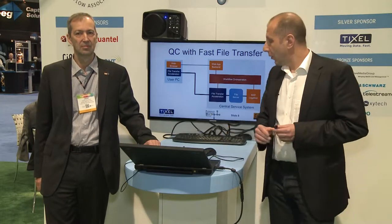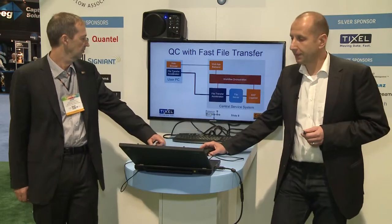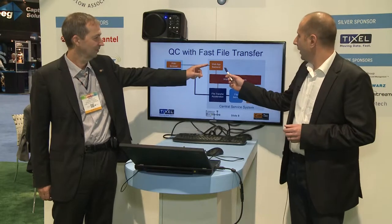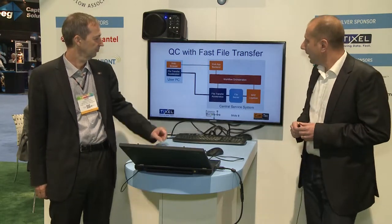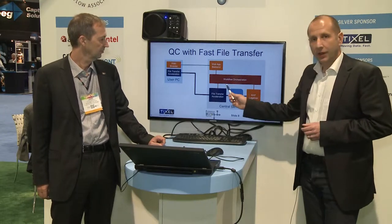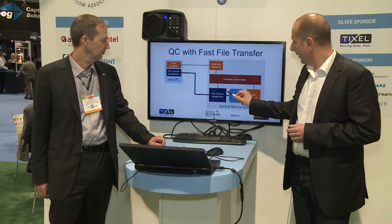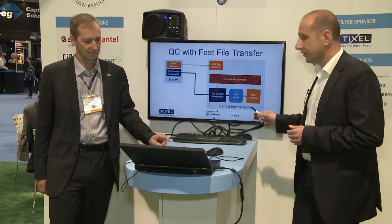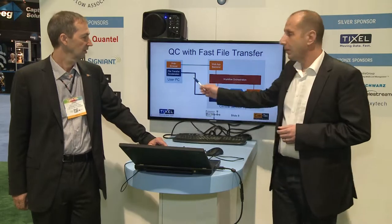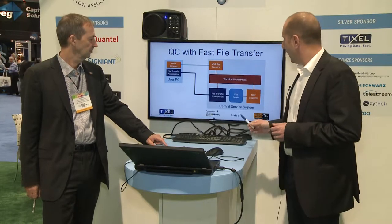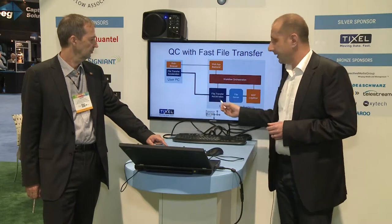A more detailed view on the overall architecture looks like this. We have an end user with a PC, a web browser, and a file transfer acceleration component. In the back end we have a web application server, a workflow orchestration system, the QC component, the MXF legalizer, a file transfer acceleration component, and a file server which makes it possible to exchange data between those. The control path goes through the web browser and the application back end through the orchestration system, and the data path goes a different way using the file transfer acceleration.